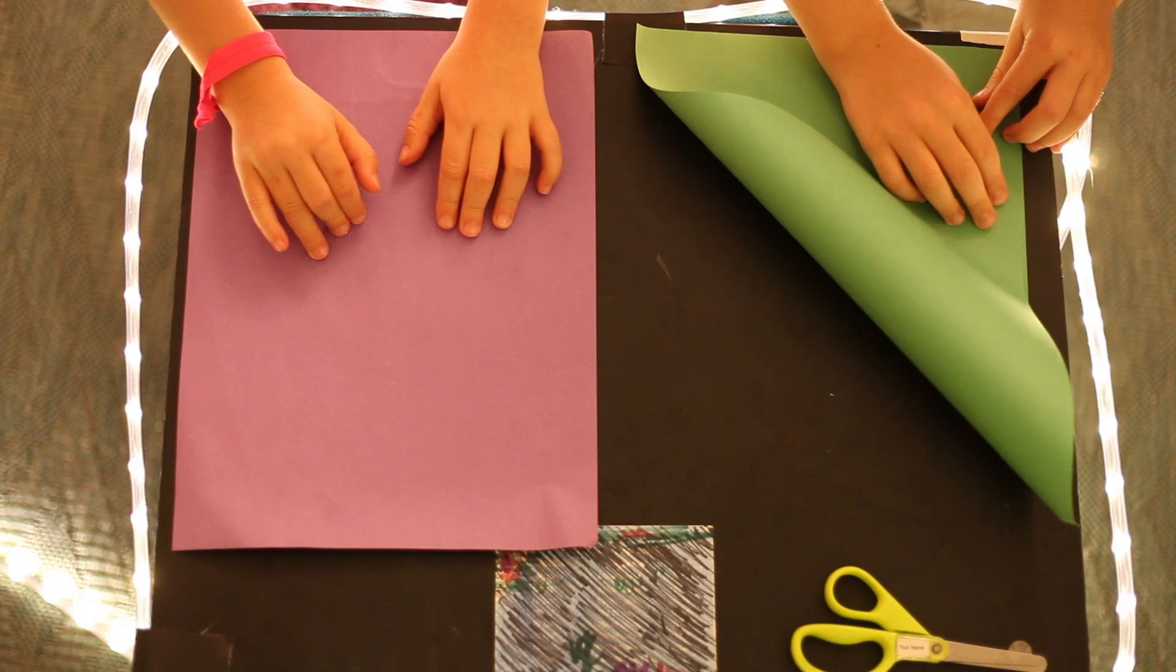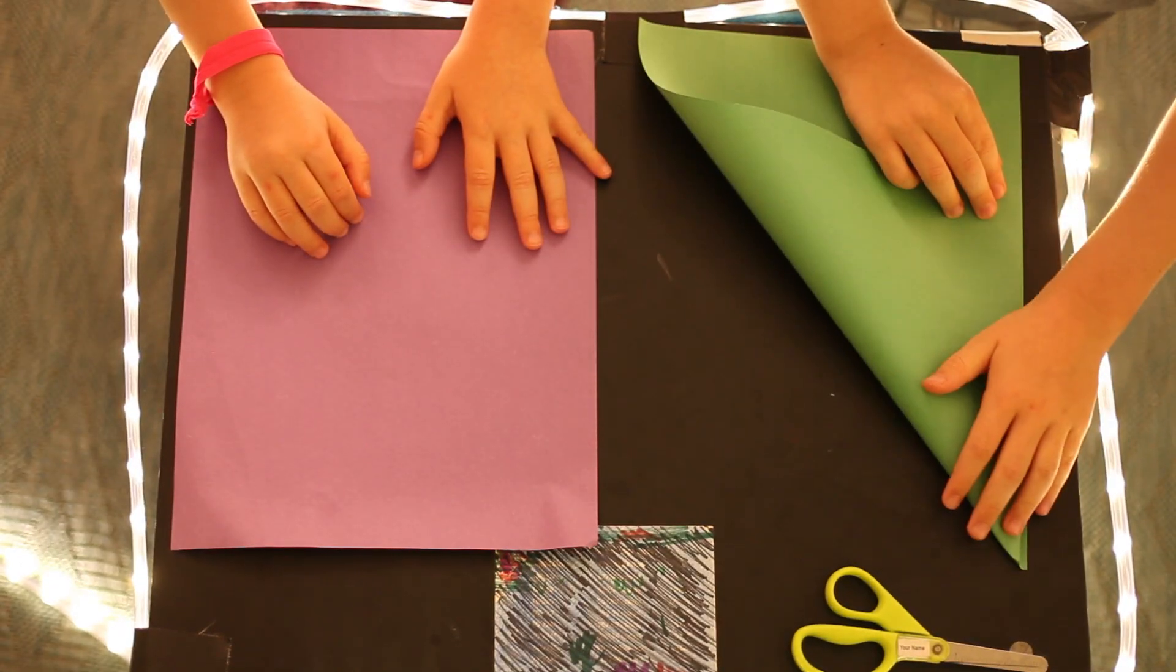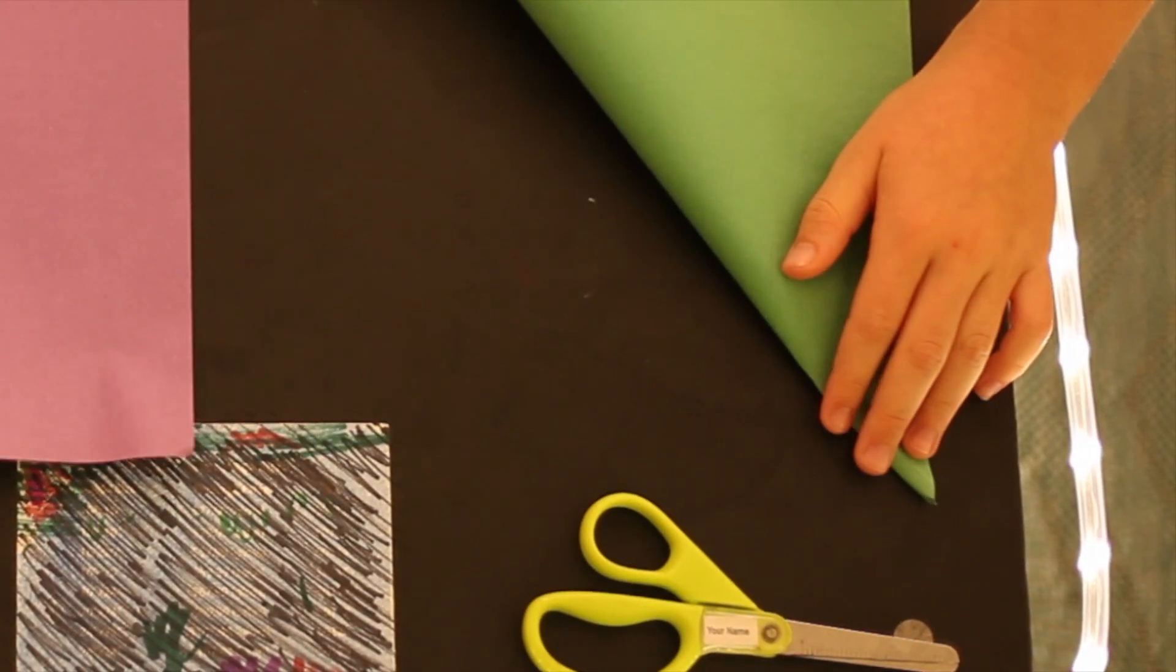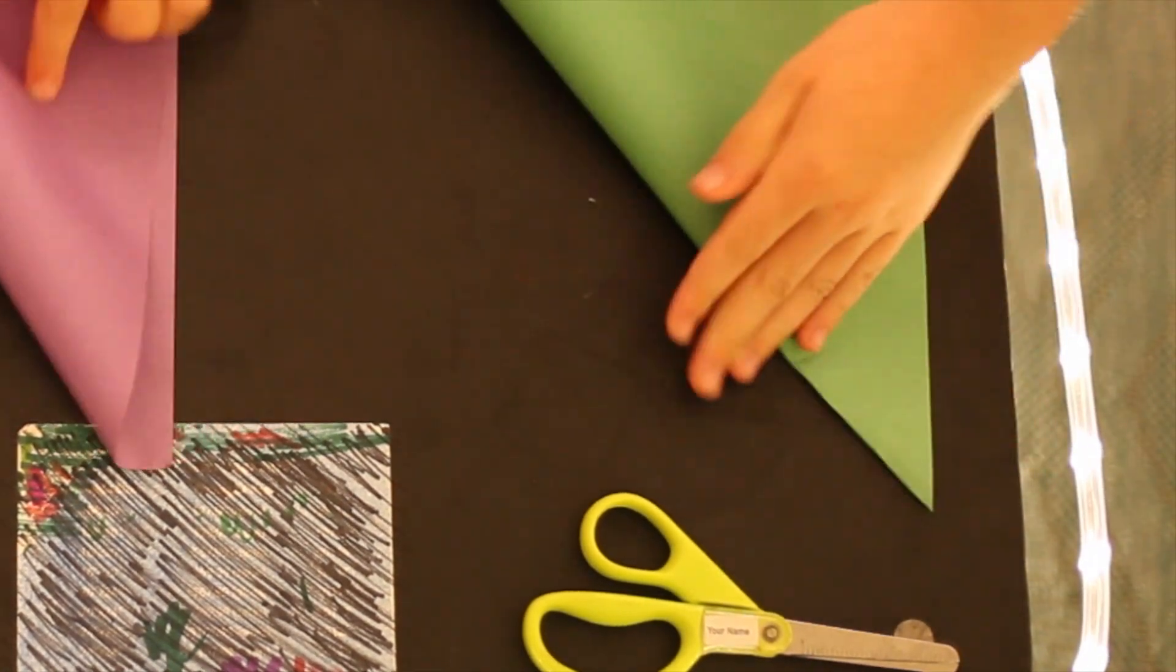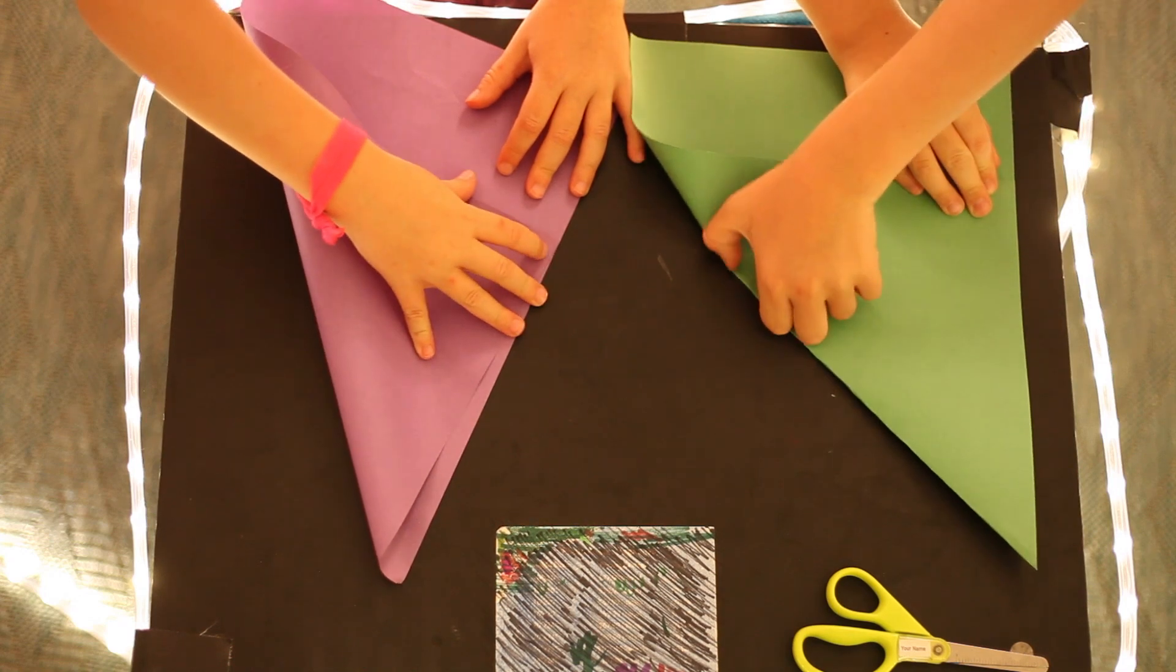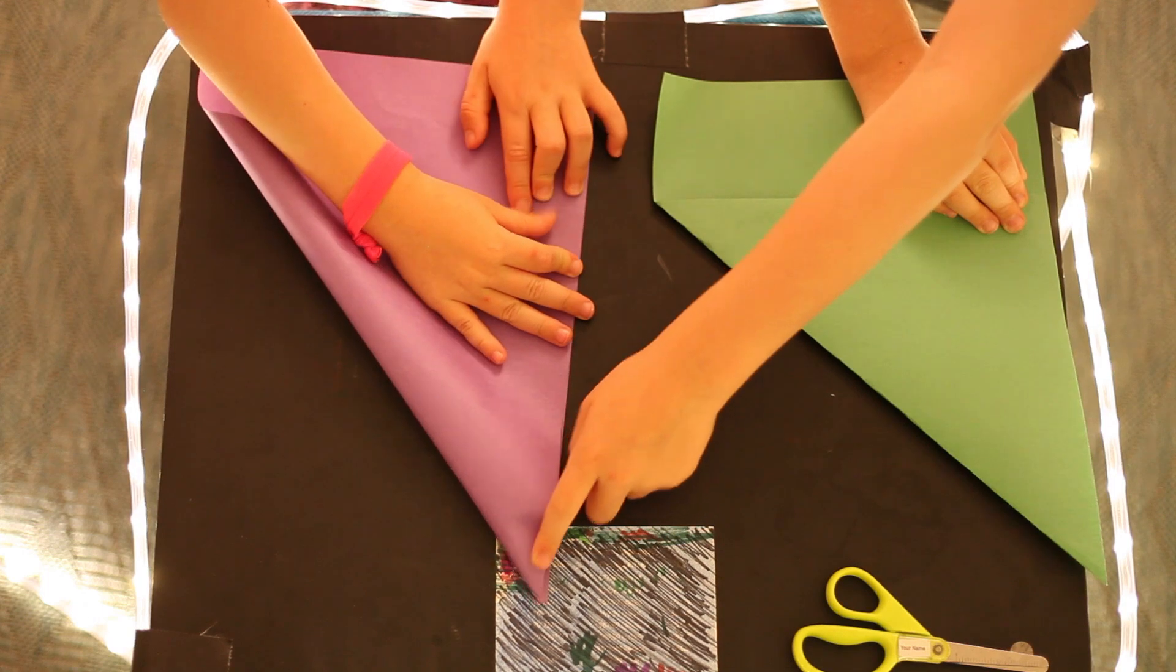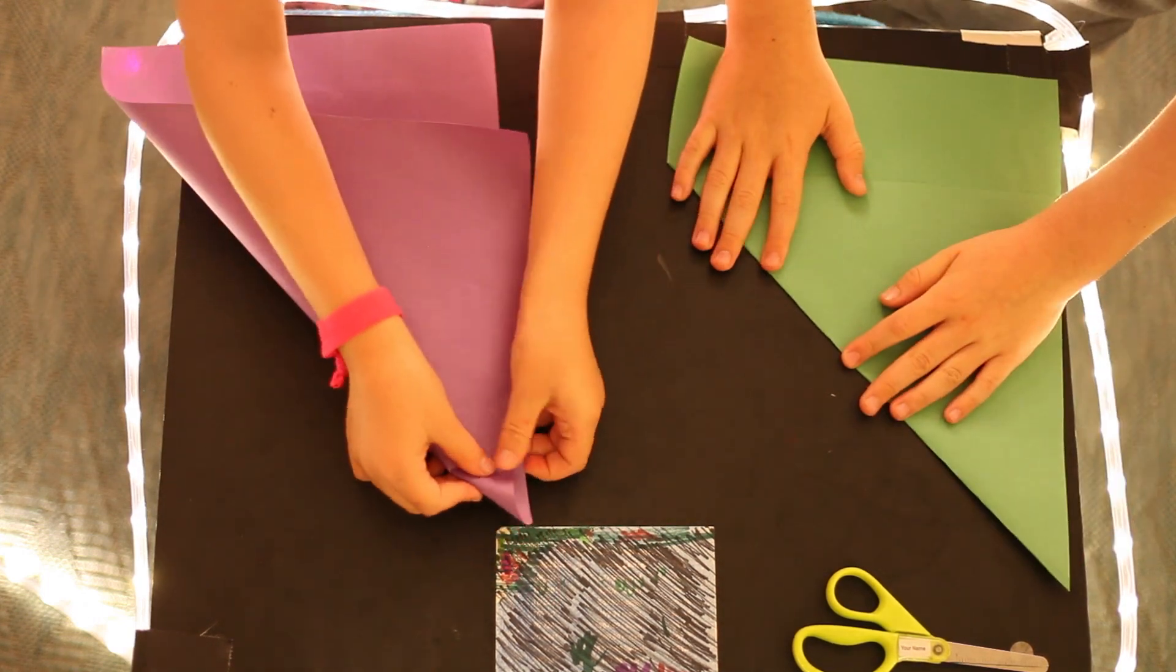First you fold it like this and then you try to get the top corner nice and lined up and pointy. Remember, nice and lined up at the top corner and pointy. I know, but I can't do that. Okay.